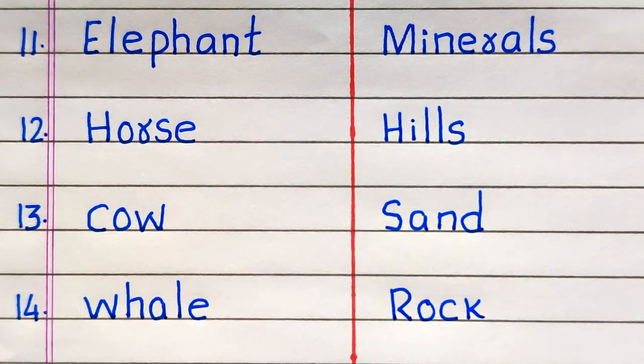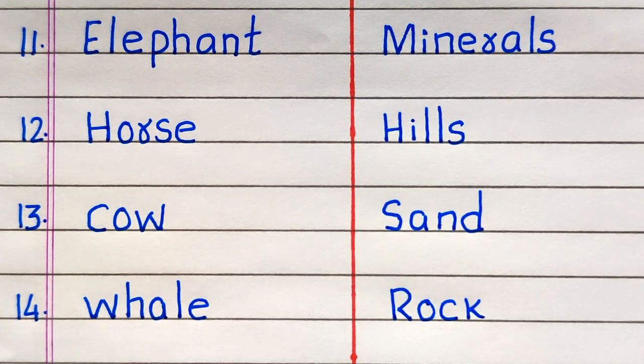The 11th example of a biotic factor is Elephant, 12th Horse, 13th Cow, 14th Whale.